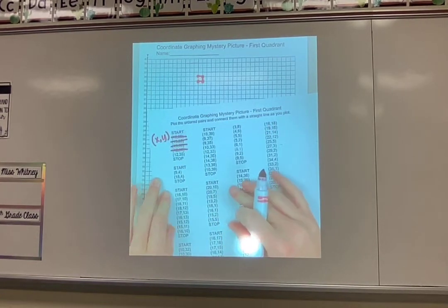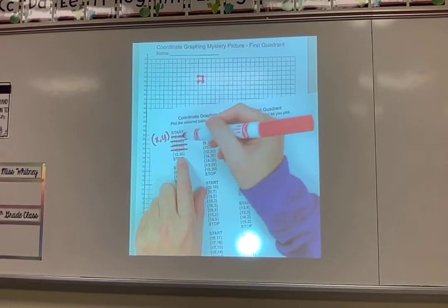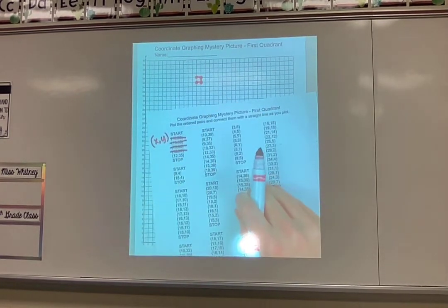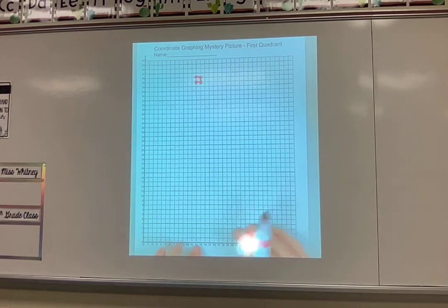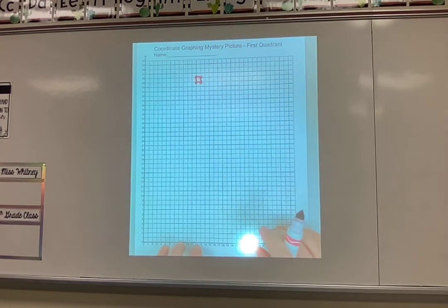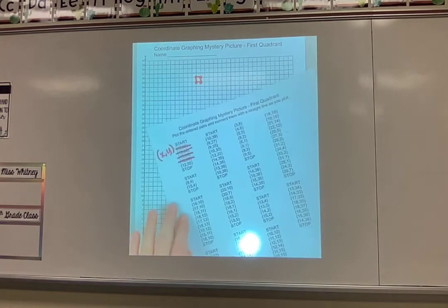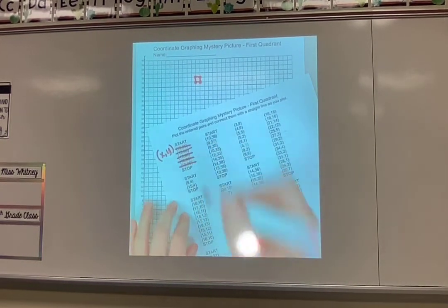Now when I get to the next one it is 12, 35. If I look back up that was the very first one I did. So when I go to 12, 35 here there's already a dot. I don't need to make another dot. That just means it wants me to finish that connection. Okay so it wanted me to connect it back to that very first dot that I made. That's why they listed it again. So I'm going to cross that one off.